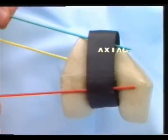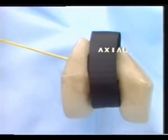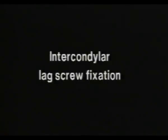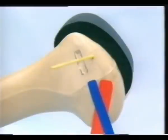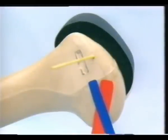The two first wires, red and blue, are now removed. Intercondylar lag screw fixation. Now the intercondylar lag screws are inserted proximally to the entry site of the plate. The dorsal cancellous screw enters immediately proximally and dorsally to the insertion of the fibular collateral ligament and the popliteus tendon, here marked in blue and red.